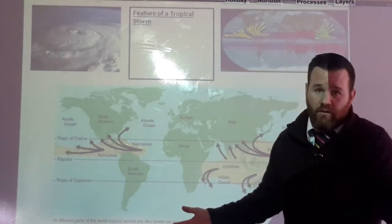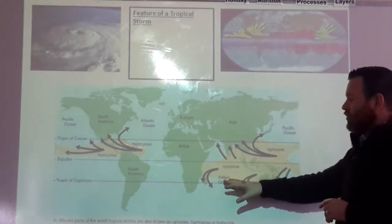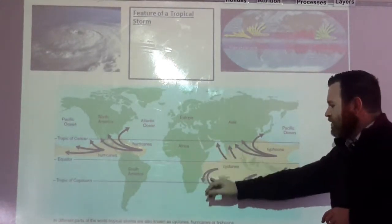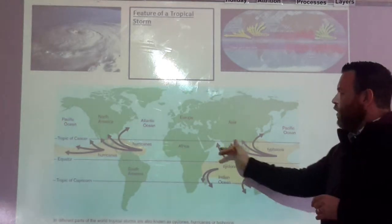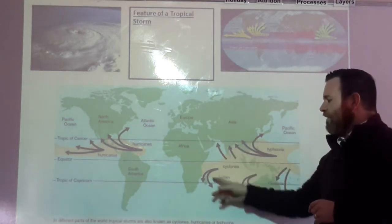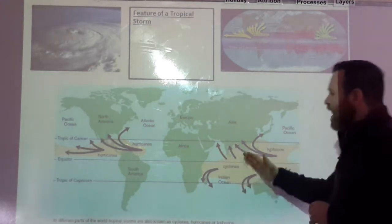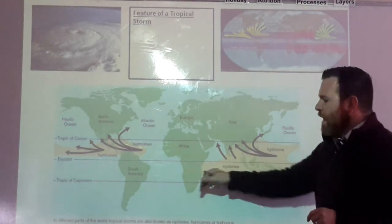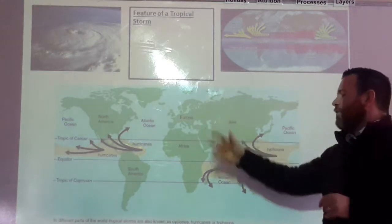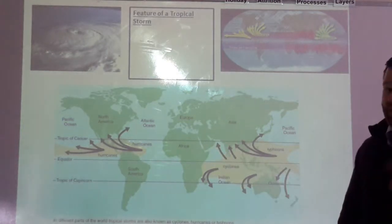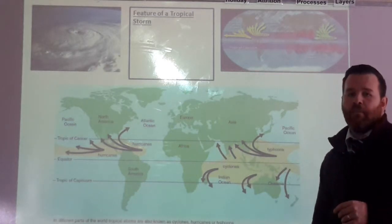Over in the Indian Ocean, from the eastern coast of Africa running into the western coast of Australia and up towards India and Bangladesh, we have our cyclones. They tend to form in this area and will usually either push towards Madagascar, as you can see with these arrows, or push towards India, Bangladesh — and one of your case studies, if you've used it, was Cyclone Myanmar.